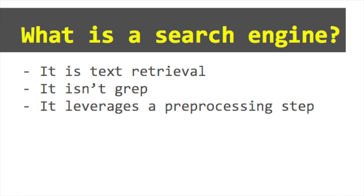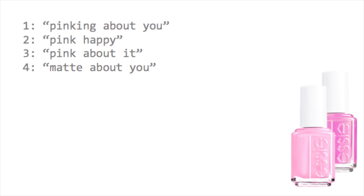So what is a search engine? It's like a text retrieval mechanism — I enter a text query and get back relevant documents. But unlike grep, it doesn't scan every document for every query. It leverages a preprocessing step called indexing to create a search index that can be used to speed up lookup on every query. What this preprocessing step actually does is step through every document, look at every term, and create a mapping from the term to the list of document IDs that contain that term.